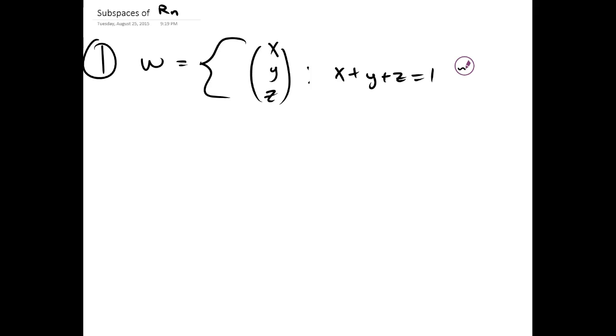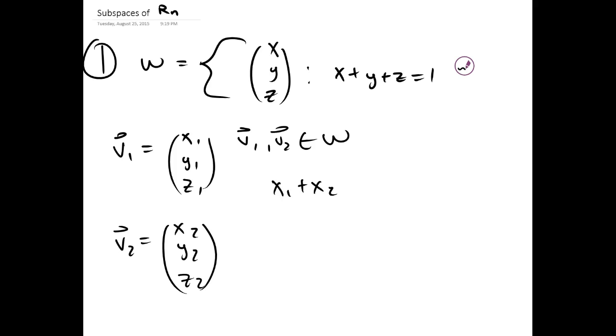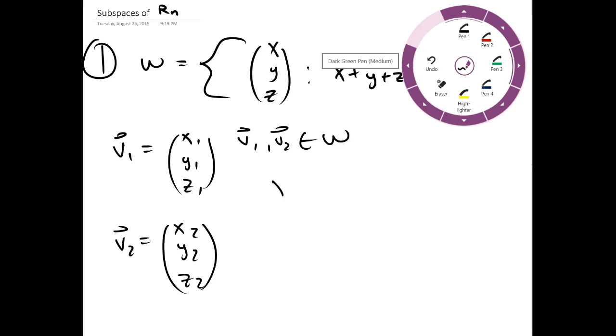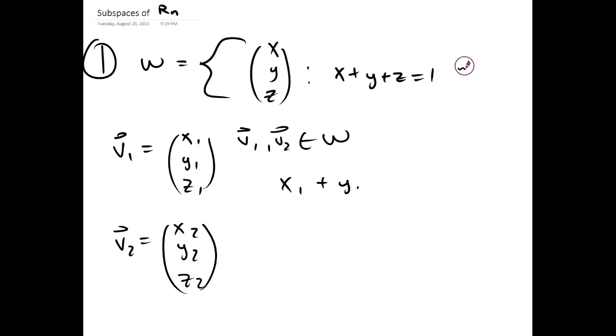So subspaces satisfy a few conditions. One is that it contains the zero vector. Another is that it's closed under addition and closed under scalar multiplication. We define the vectors V1 as (x1, y1, z1) and V2 as (x2, y2, z2). We define V1 and V2 to be in W. That means x1 plus y1 plus z1 equals 1, because that is the condition to be inside W.